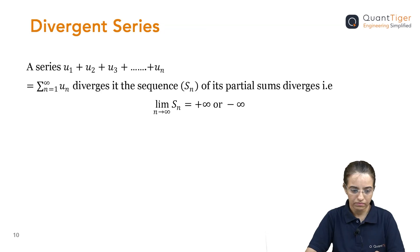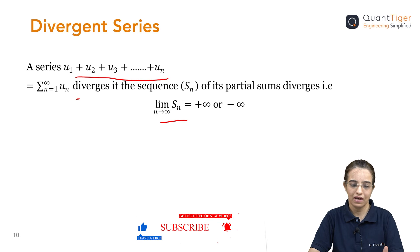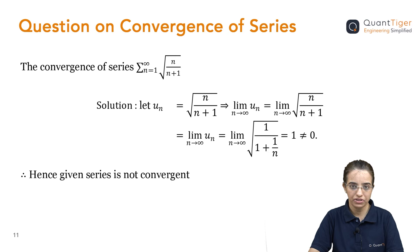Here, the same thing I have put over here: if this S_n, the addition of few terms from the infinite series, is divergent—either going towards plus infinity or minus infinity—then the series is divergent. Now, let us see the question I have taken here. The limit is n going from 1 to infinity of √n/(n+1). We are to check whether this series is convergent or not.